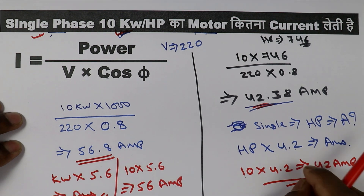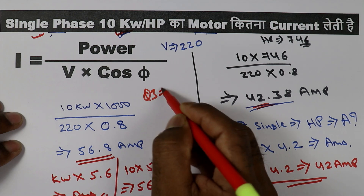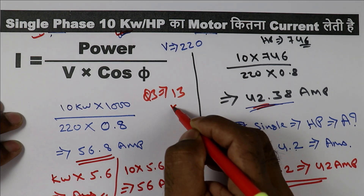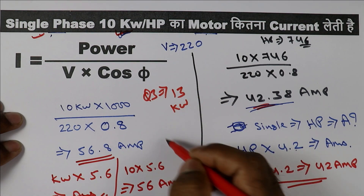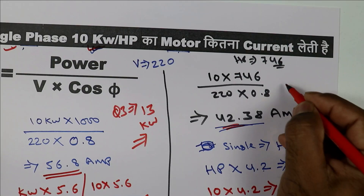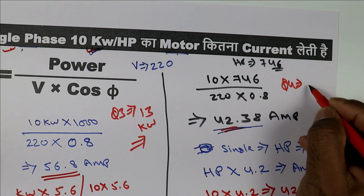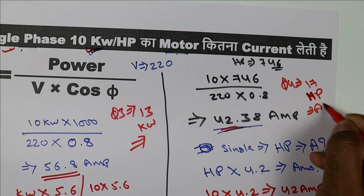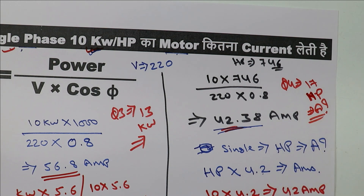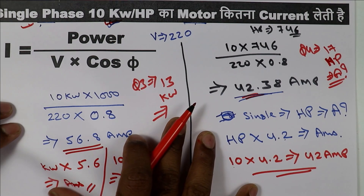Now I have two more questions for you. Question number 3: you have a 13 kilowatt motor of single phase — find the current rating. Question number 4: you have a motor of 17 HP — what is the current rating? Tell me the answers of all 4 questions by commenting in the comment box.